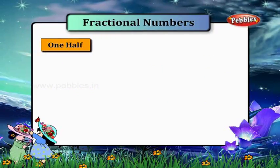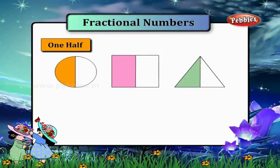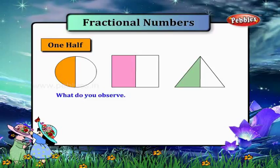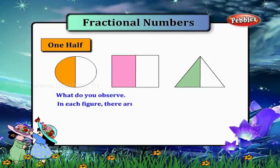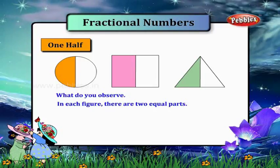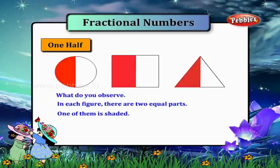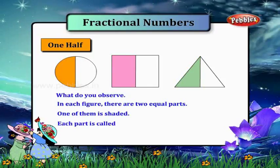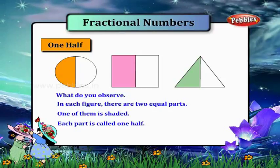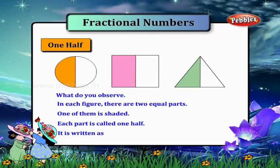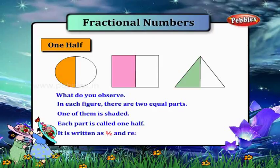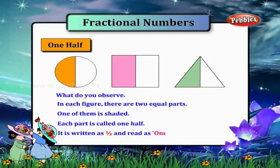One half. Now look at these figures. What do you observe? In each figure, there are two equal parts, and one of them is shaded. Each part is called one half. It is written as one by two and read as one half.